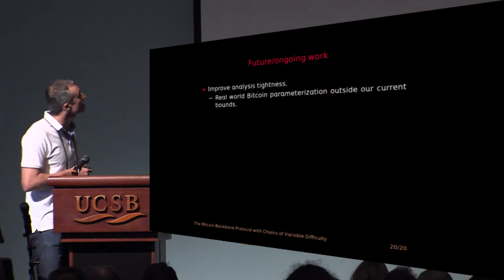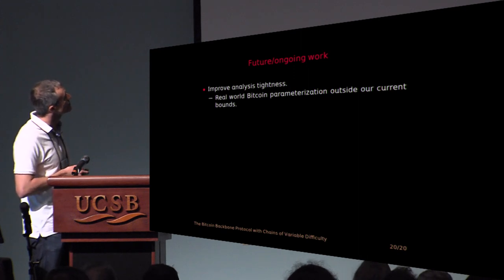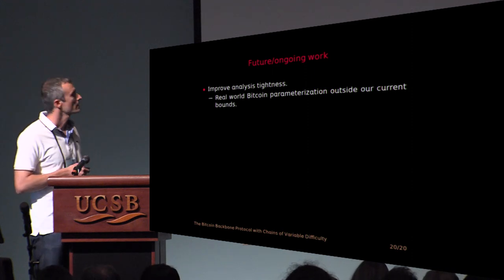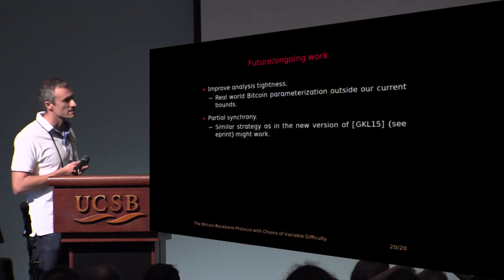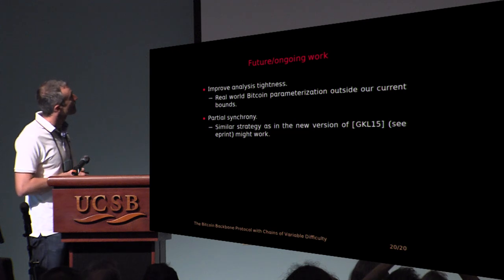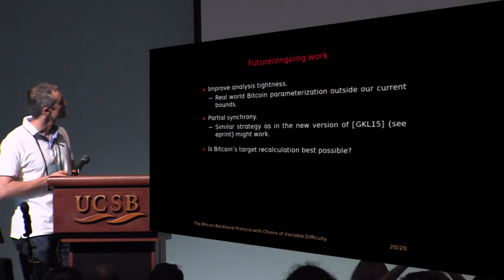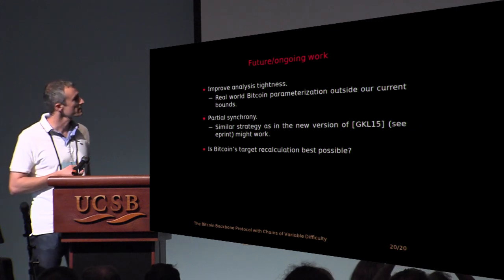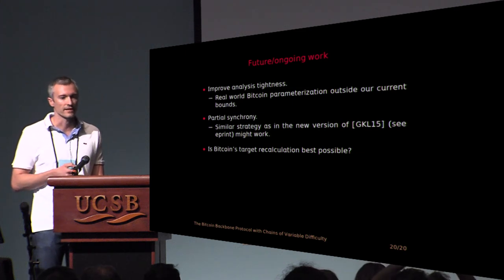So finally, just some pointers for future work. Our bounds we get are not good for the real-world parameterization of Bitcoin, so it would be interesting to improve the analysis and get some tight analysis. Another thing which is interesting is to study it in the case of the partial synchronous model, where there's a delay on the messages. And another question is to study the target recalculation mechanism. One could think of other things he could do to recalculate the target. Is Bitcoin the best one?